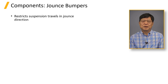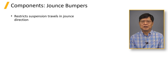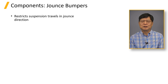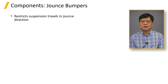The jounce bumper or bump stop restricts the suspension travel in the jounce direction. Once the suspension hits a bump, it gains momentum and accelerates in the jounce direction. The ride spring and damper try to slow down the suspension. In some cases, the spring and damper are not enough to stop the suspension at the travel limit, or max effective jounce — in short, MEJ. The jounce bumper is a non-linear spring to absorb the kinetic energy of the suspension to make a complete stop at MEJ.